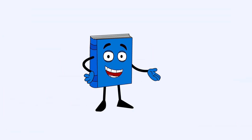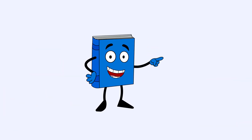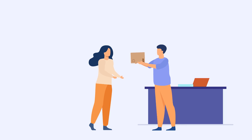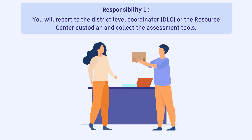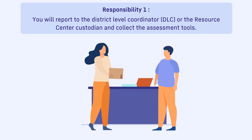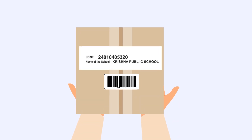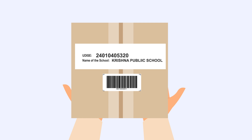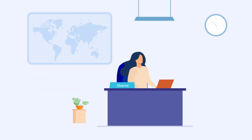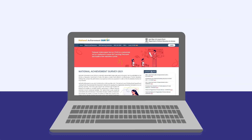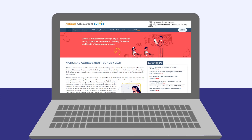You are required to carry out a set of responsibilities as an observer. First, on the survey day, you will report at the DLC or the Resource Centre custodian and collect the assessment tools, test booklets, OMRs and background questionnaires. While collecting, check the UDISE plus code and the school name on the packets being collected. You will come to know about the name and address of the DLC custodian through your NAS portal login, where you have to collect the survey materials.